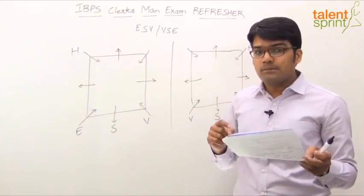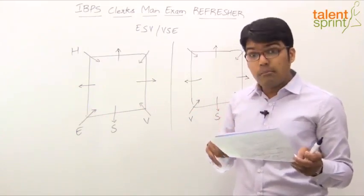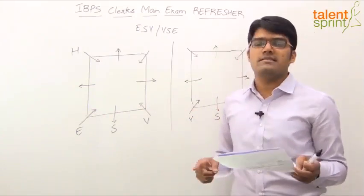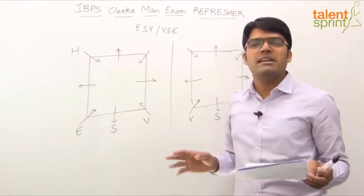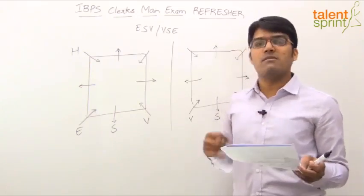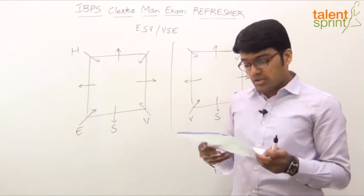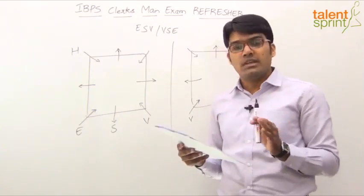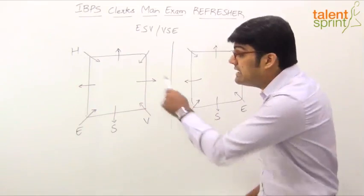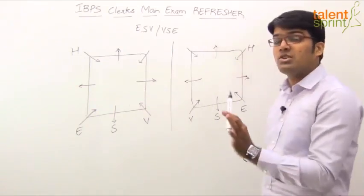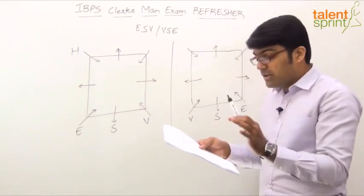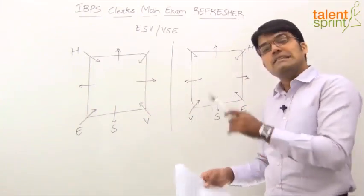T sits second to the right of U. But neither T nor U has been marked. So, can't really help. Continue reading. U is not an immediate neighbor of E but V. What does this statement mean here? U is not an immediate neighbor of E. But he is an immediate neighbor of V.